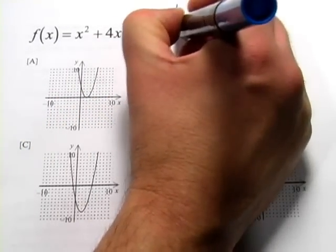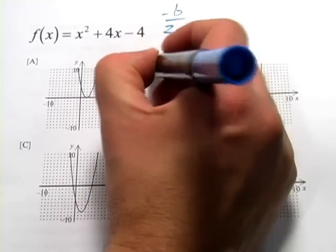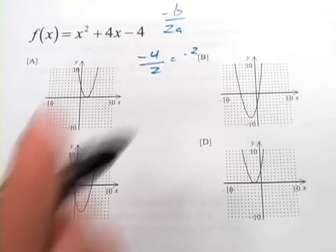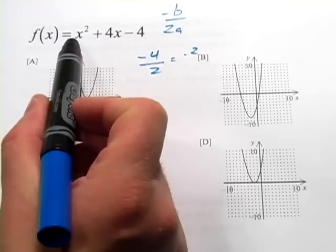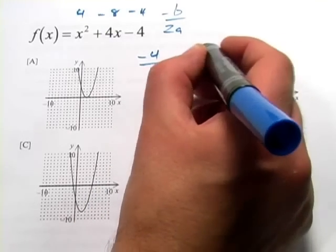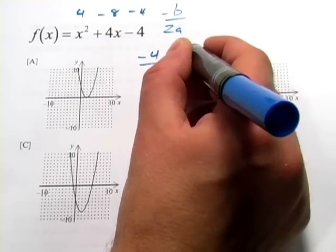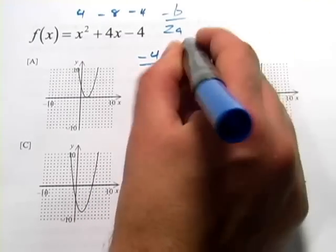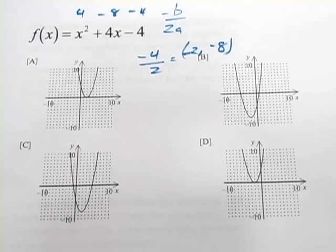So negative B over 2A. That's going to be negative 4 over 2, or the X coordinate is negative 2. And if we put a negative 2 in here, we'd get 4 minus 8 minus 4. So it looks like it's going to be negative 2, negative 8 for our vertex.